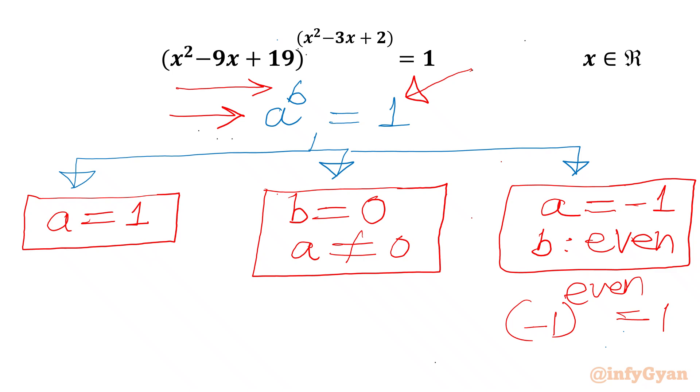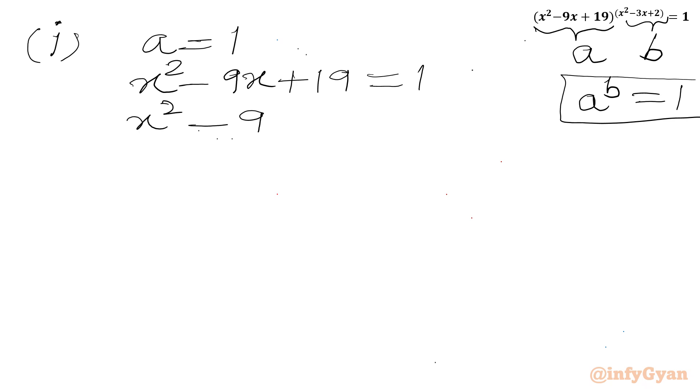Let us solve as per our given equation. I will write case 1. Here our base a equal to 1. This is a power b equal to 1 form. So I can write x square minus 9x plus 19 equal to 1. Equal to 0. Or we can write x square minus 9x plus 19 minus 1 equal to 0. Or x square minus 9x plus 18 equal to 0.